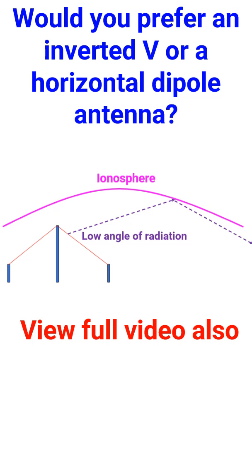An inverted V dipole has a lower angle of radiation and is good for working long-distance DX stations. The low angle of radiation reaching the ionosphere reflects down at a longer distance.